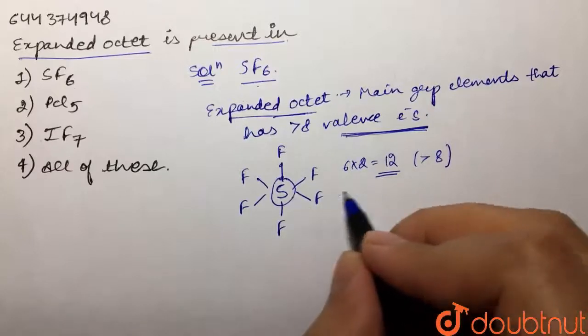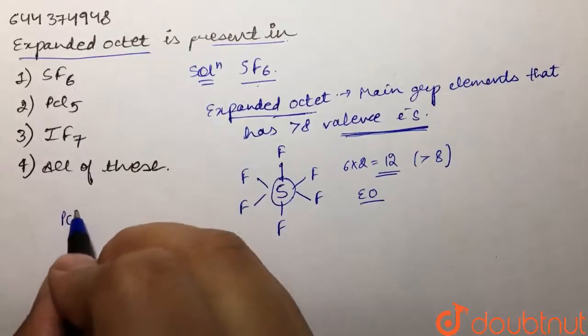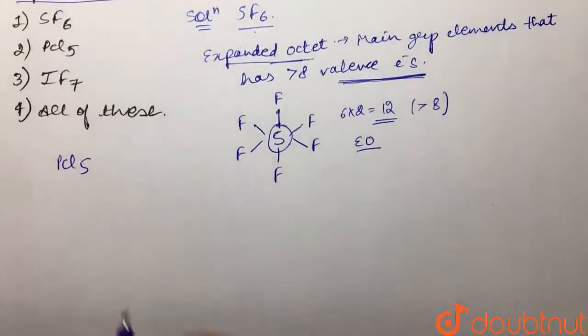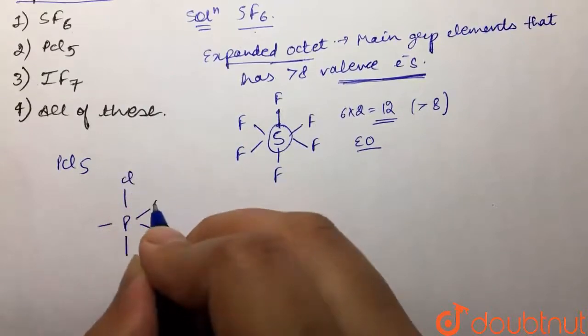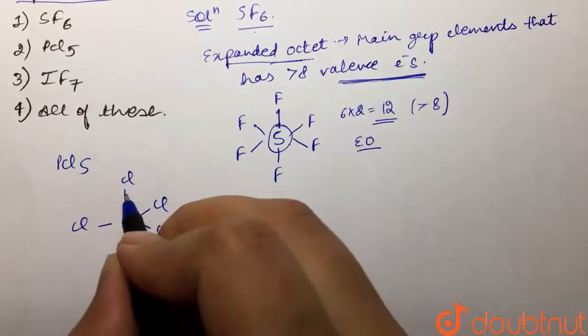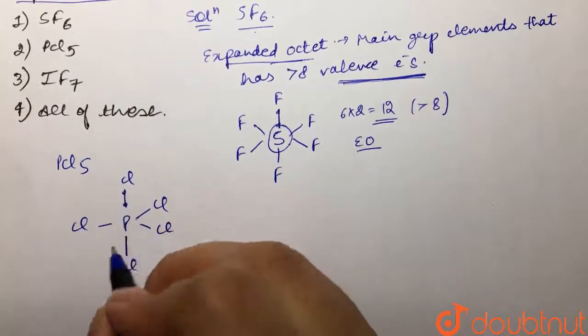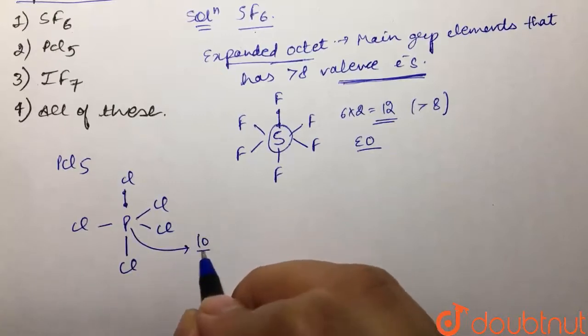Then if we talk about PCl5, PCl5 is trigonal bipyramidal. It has structure like this. Again, each bond would have two electrons. We have five bond pairs, so this phosphorus also has 10 valence electrons, which is greater than eight. So this also has expanded octet.